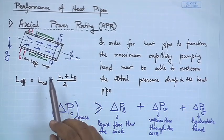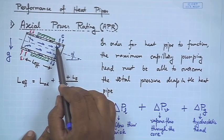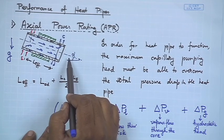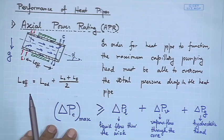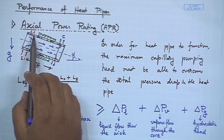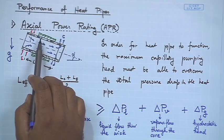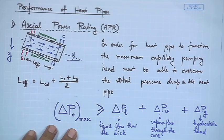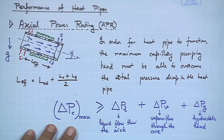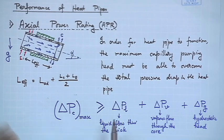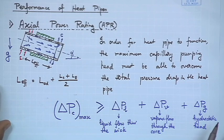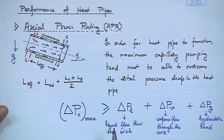The hydrostatic head is important because as the liquid is pumped through the wick, it also has to overcome the force due to gravity. The tendency of the liquid will be to come down along the direction of gravity, and the capillary pumping head has to prevent that and force it to flow in the opposite direction. So next we will look at expressions for each of these terms.